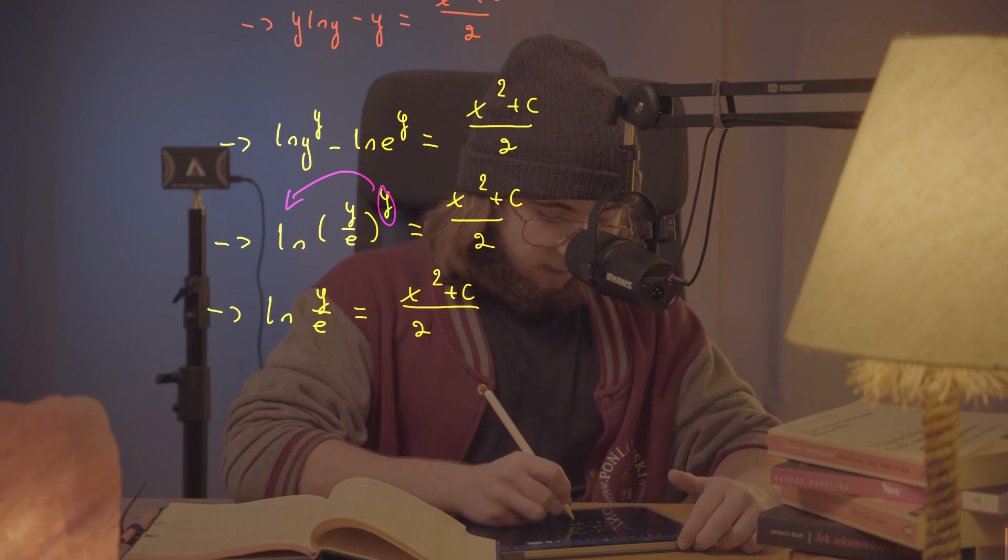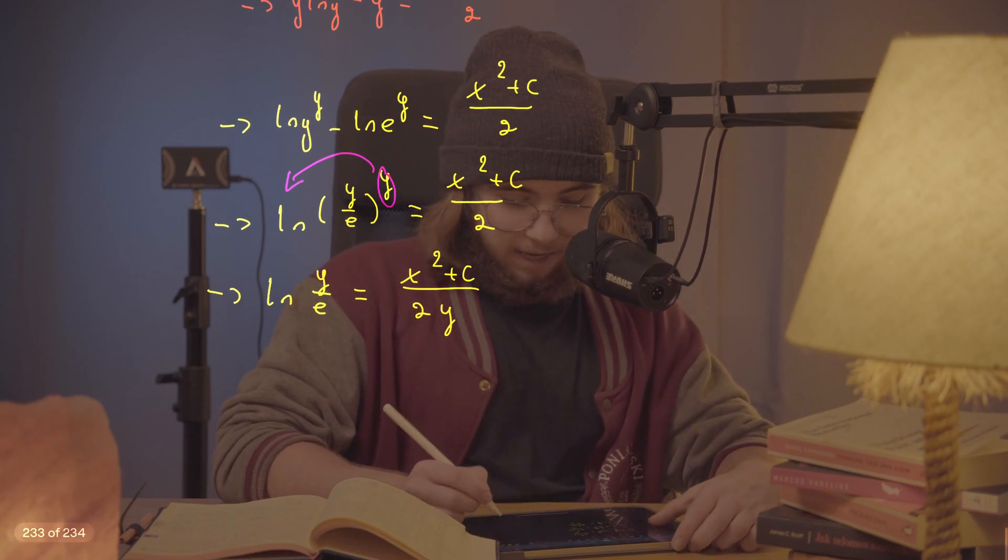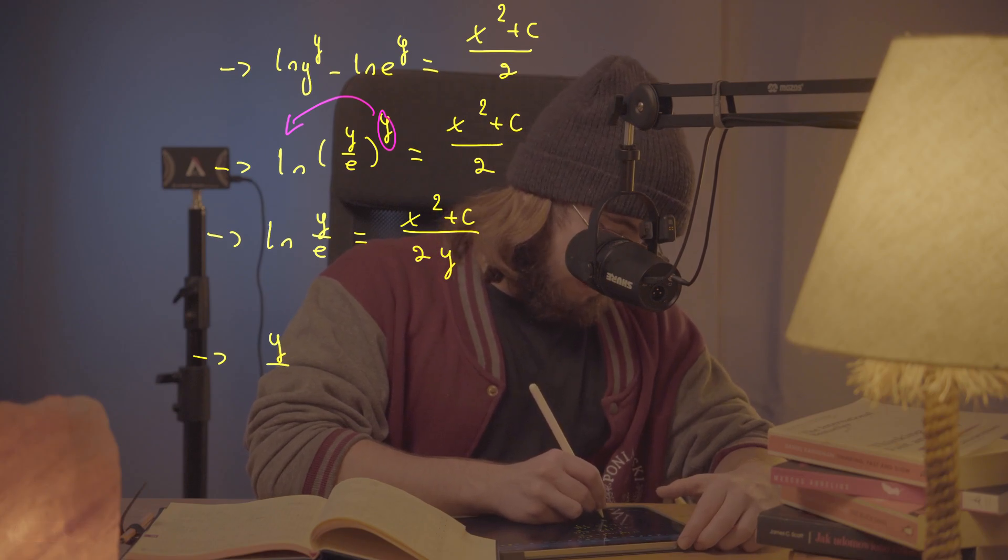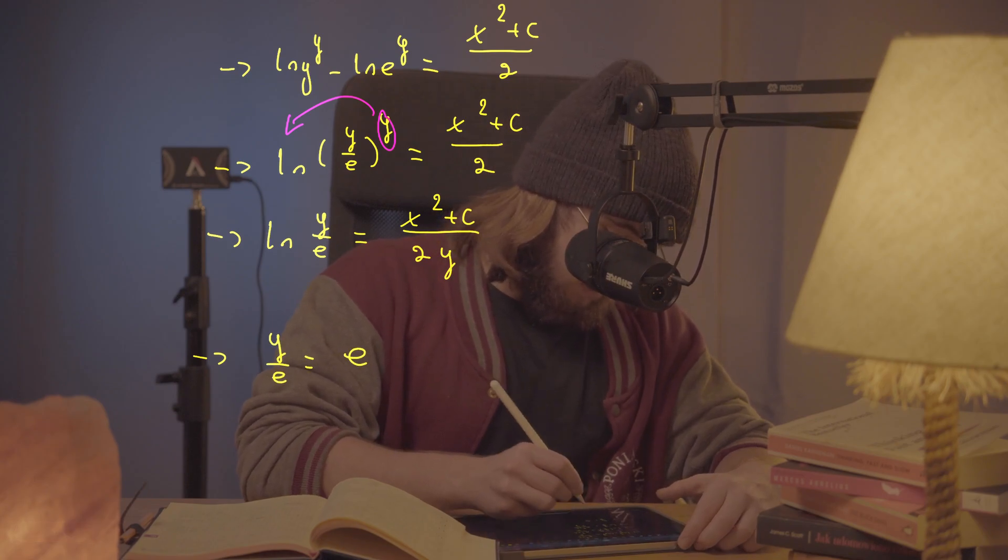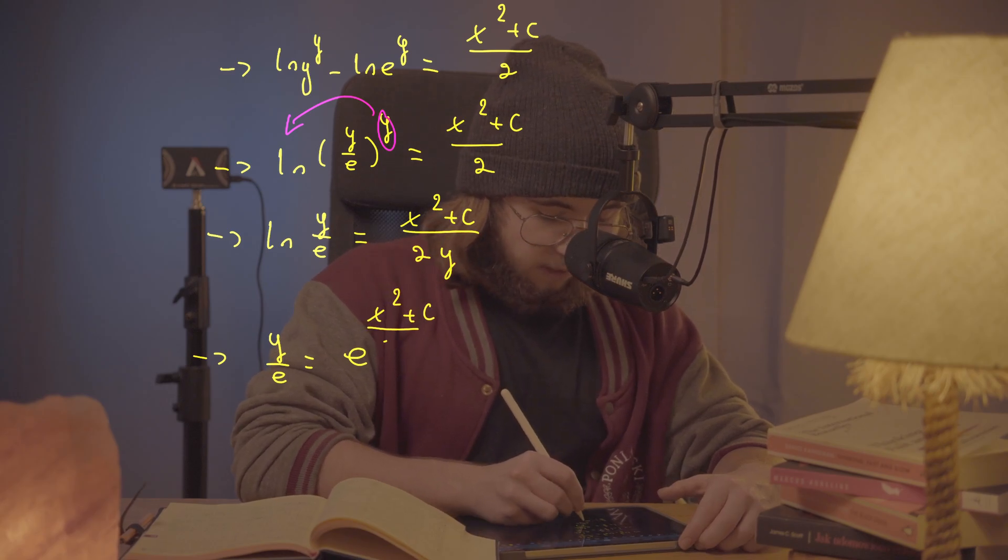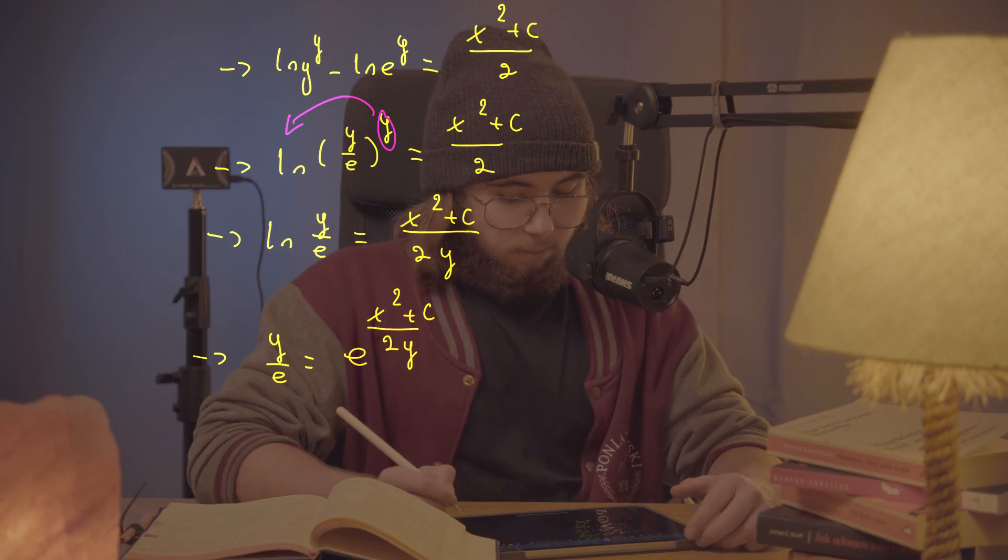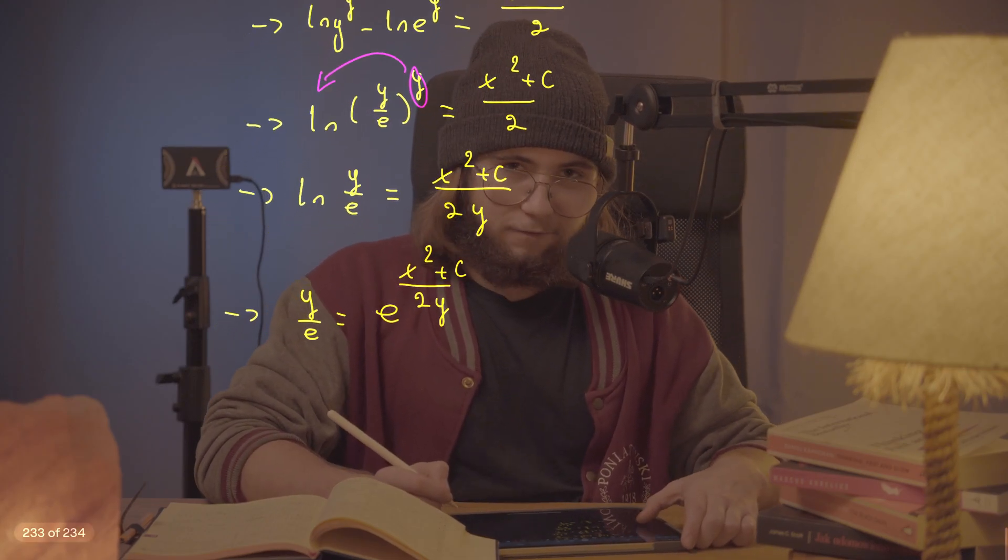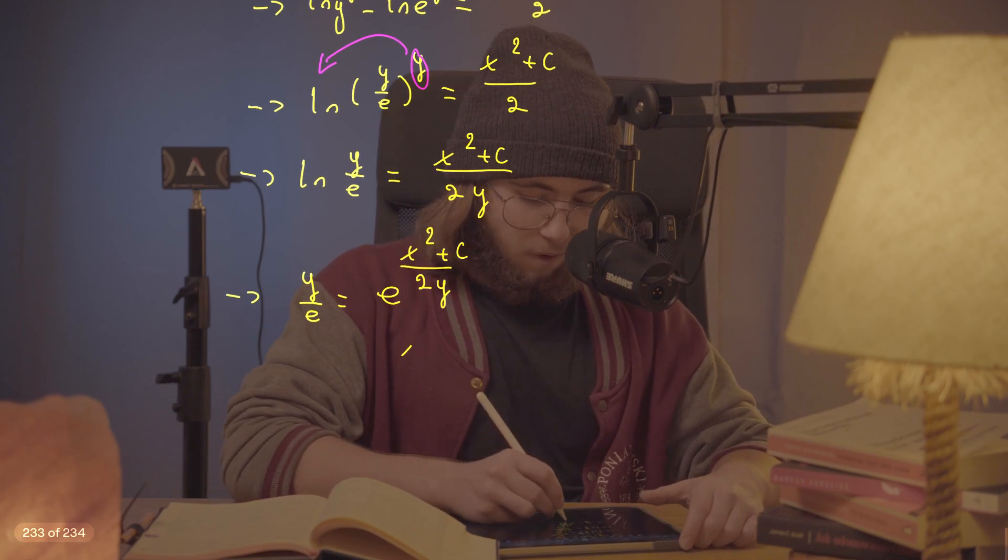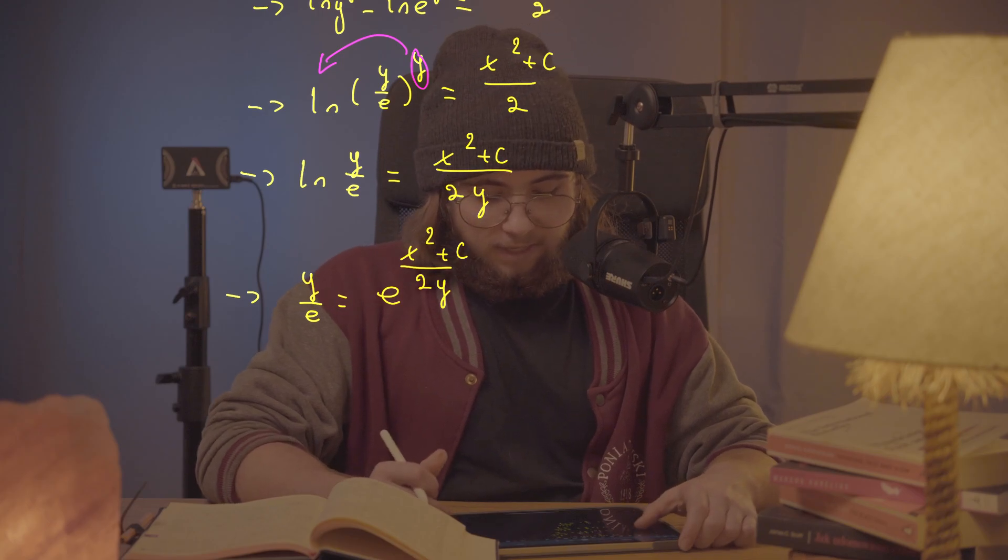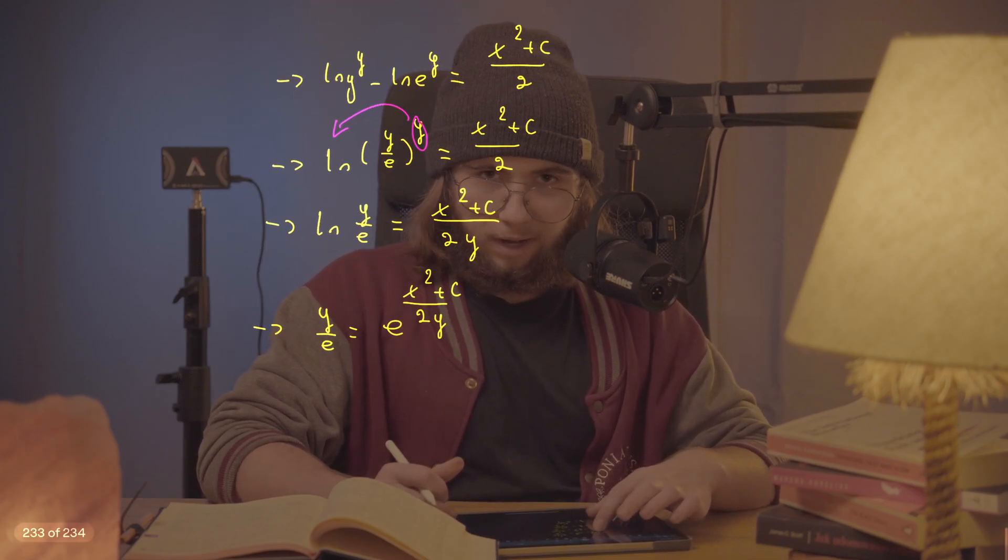And so what I get now is I can exponentiate both sides of this equation and get just y/e equal to e^((x squared plus c)/(2y)). But now I'm not very close to the closed formula for y, honestly. I mean, I've got y here in the exponent here divided by e. What's going on there? And how am I supposed to get the closed formula for y?